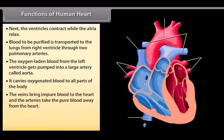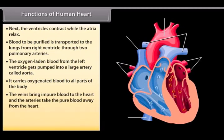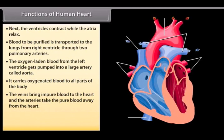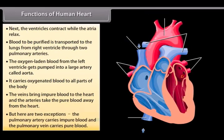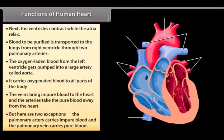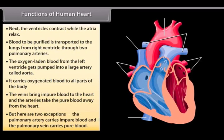The veins bring impure blood to the heart and the arteries take the pure blood away from the heart. But there are two exceptions: the pulmonary artery carries impure blood and the pulmonary vein carries pure blood.